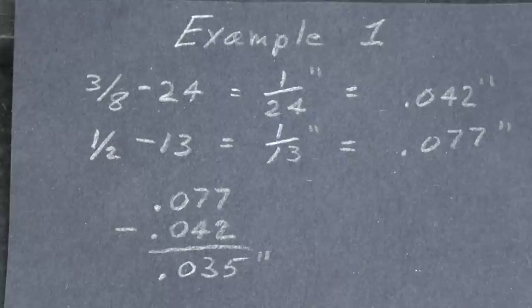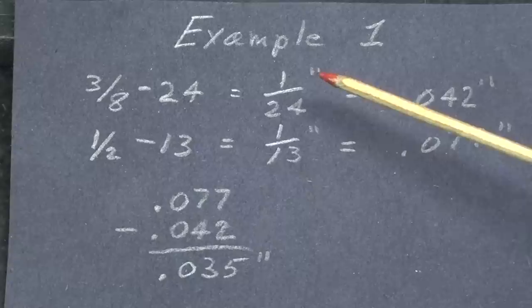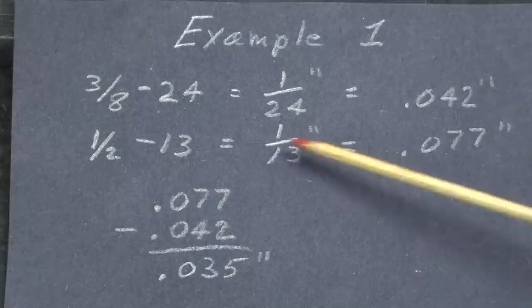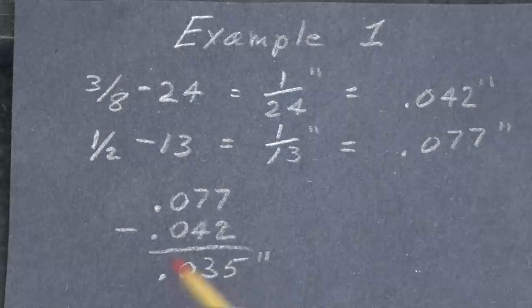If you don't like the math, fast forward just a little bit. But here's example one that I just showed you. The three-eighths twenty-fourth thread has a lead or a pitch of one-twenty-fourth of an inch, or in a decimal that's forty-two thousandths. The half-thirteenth has a lead of one-thirteenth of an inch, which is seventy-seven thousandths. If you subtract one from the other, that's the difference when we're subtracting, we have thirty-five thousandths.